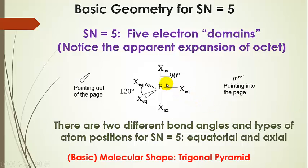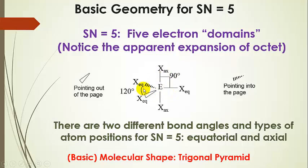Steric number five shows an apparent expansion of the octet. The equatorial positions are in the plane of the screen, one is going behind the screen, one is coming out, and the two axial positions are straight up and down in the plane. There are two different bond angles for the trigonal bipyramidal basic geometry: 90 degrees between the axial and equatorial positions, and 120 degrees between equatorial positions.